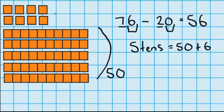And up here, we've still got our 6 ones. So 50 plus 6 equals 56, which is what we worked out when we didn't use the materials.